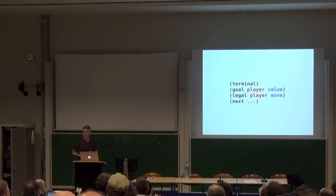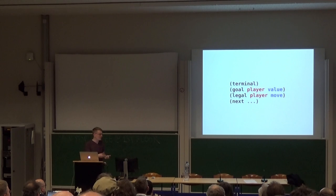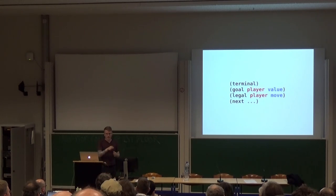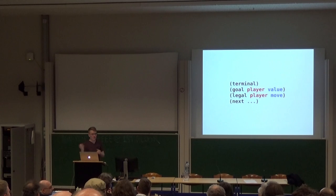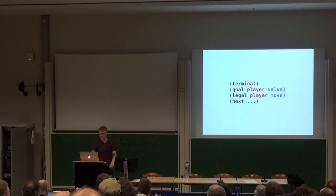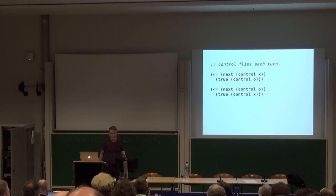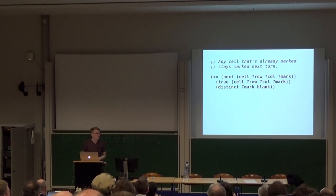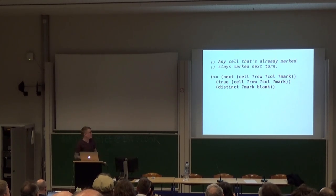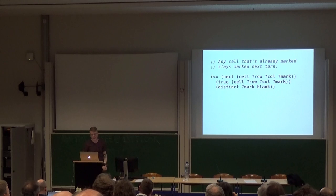The most important part: now we've got a state and some moves, how do we turn it into a new game state? We define this next predicate, and basically we rebuild the next state from scratch at every iteration. Control is pretty simple — if O has control in this turn, then in the next turn X will have control, and vice versa. We also have something that any cell that's already marked stays marked in the next turn — if I mark an X it's never going to get erased.